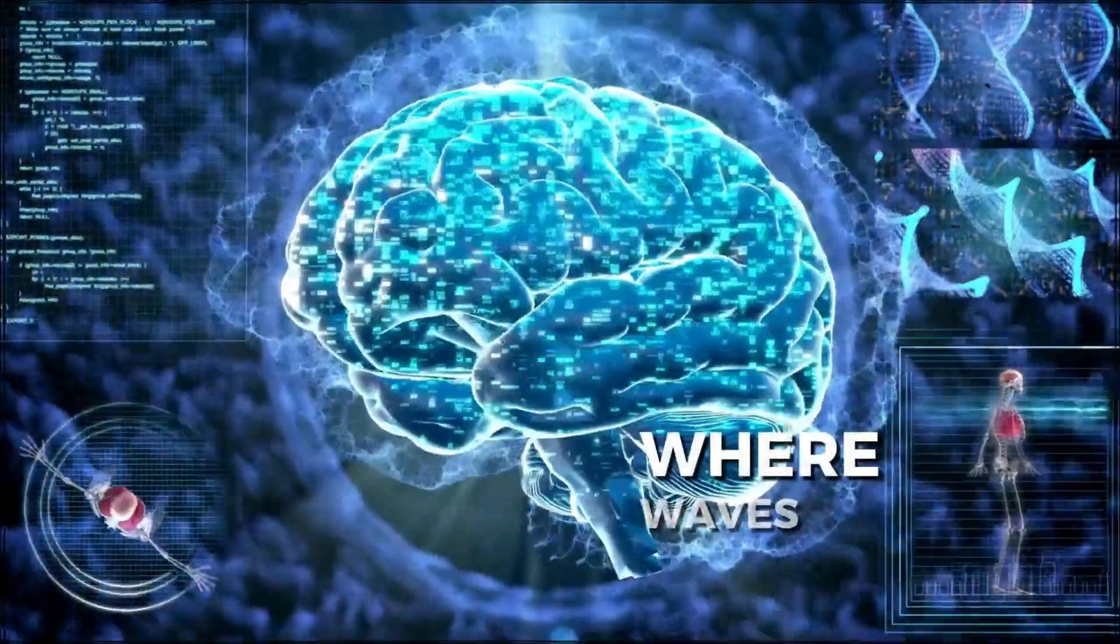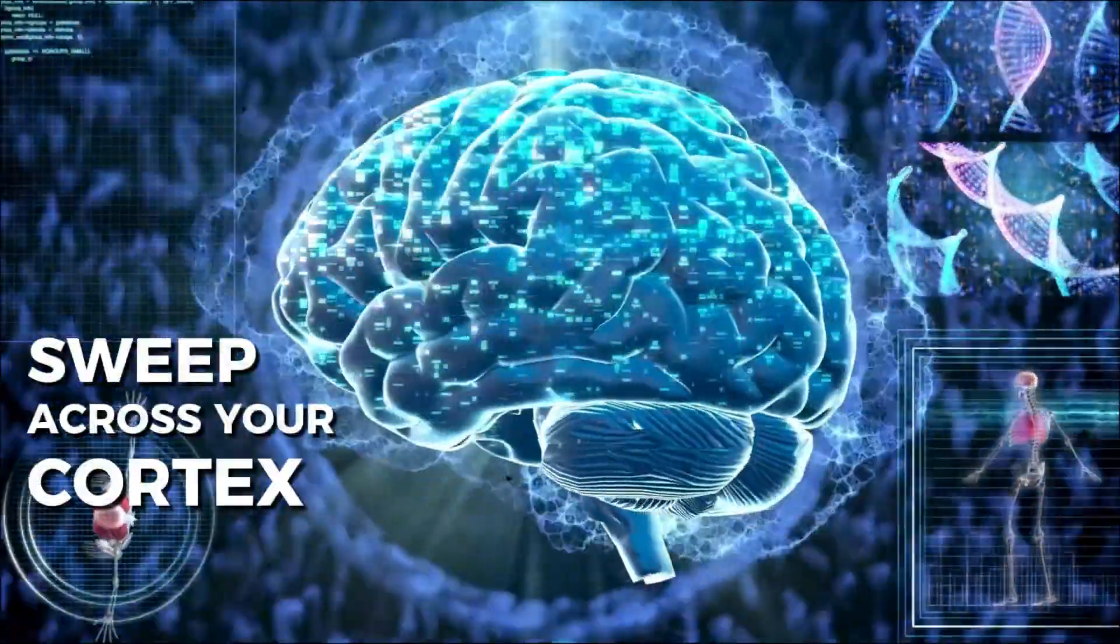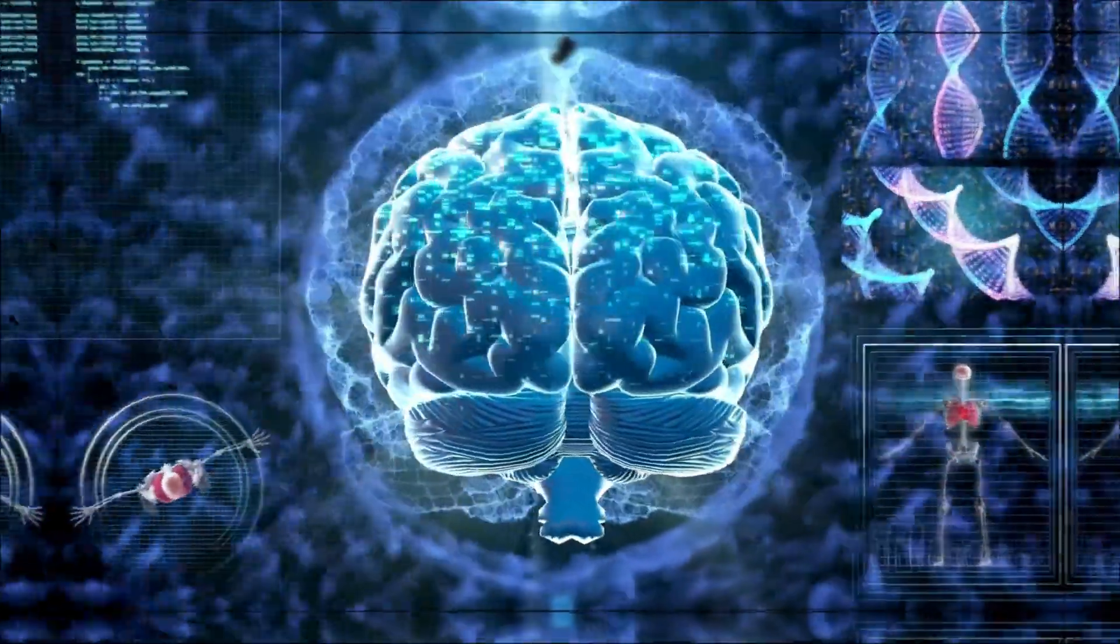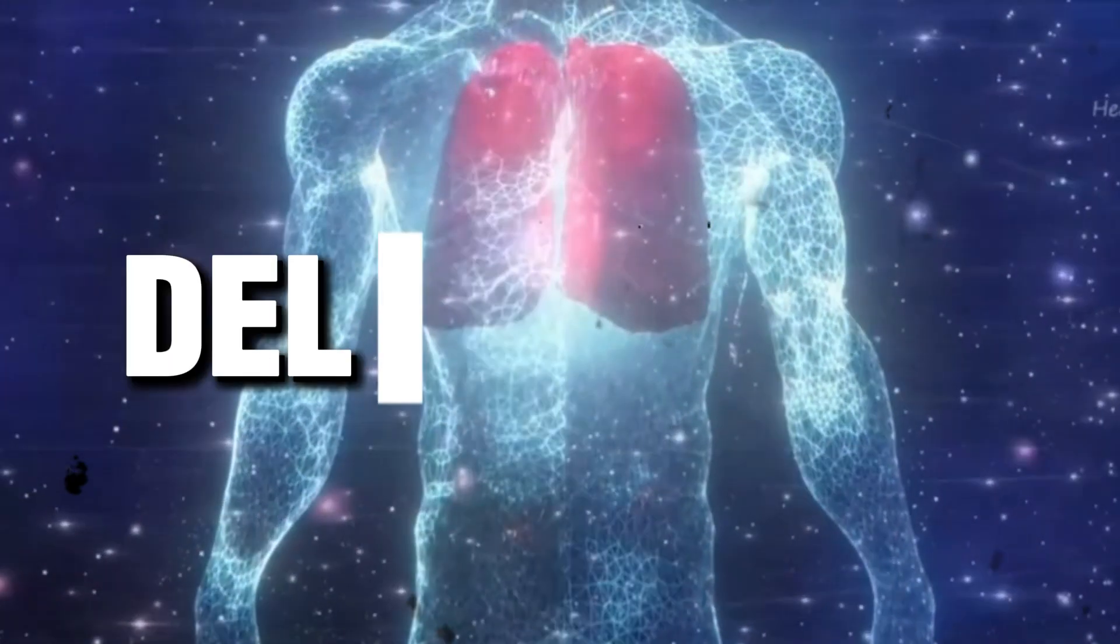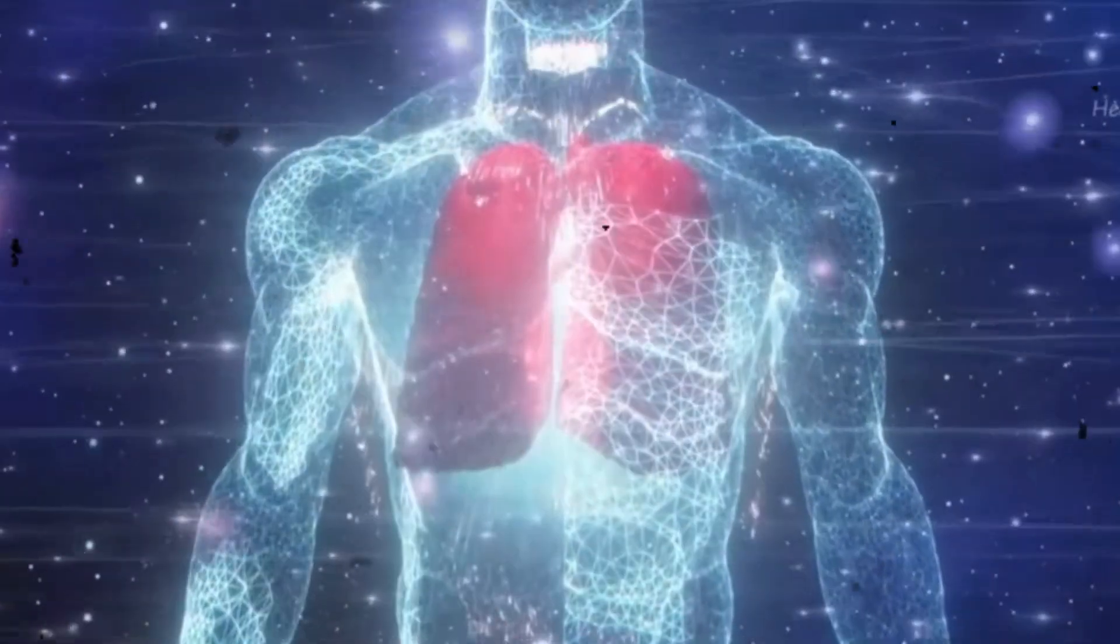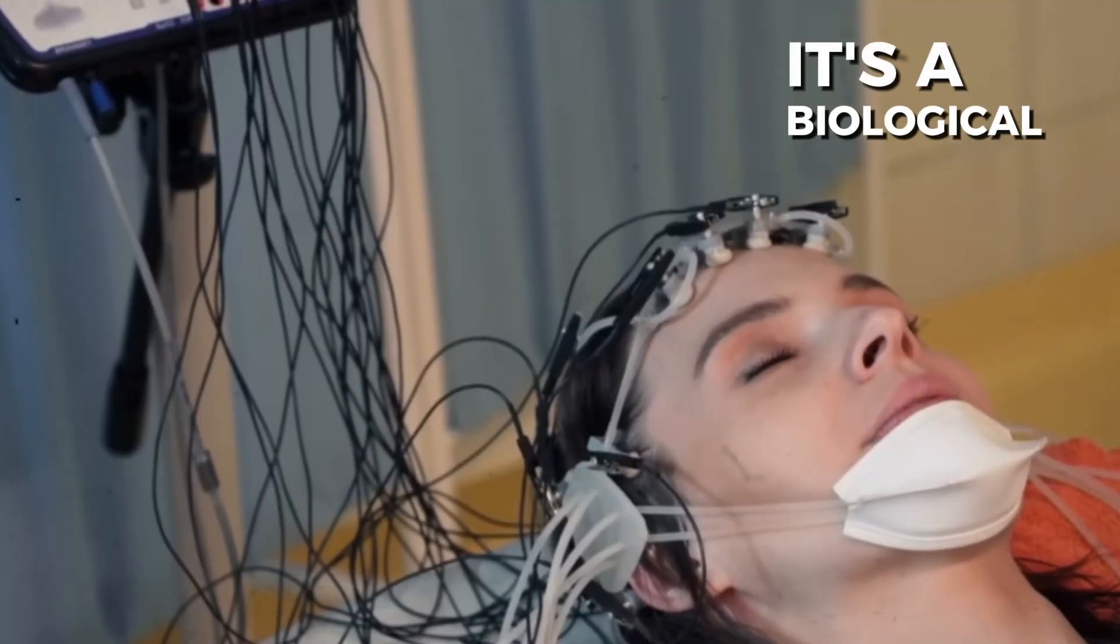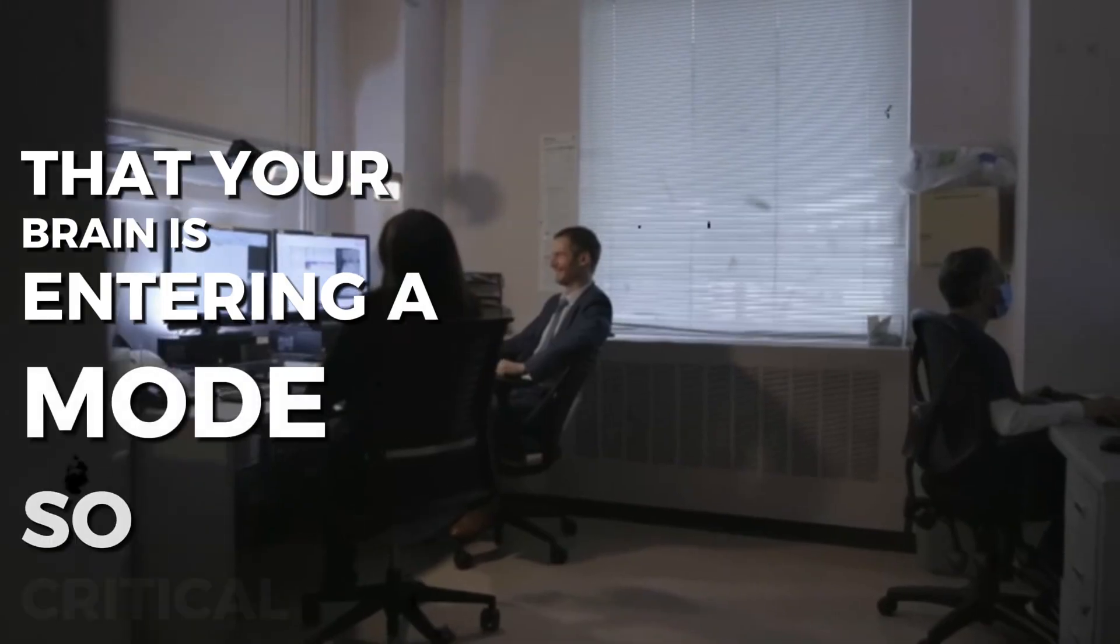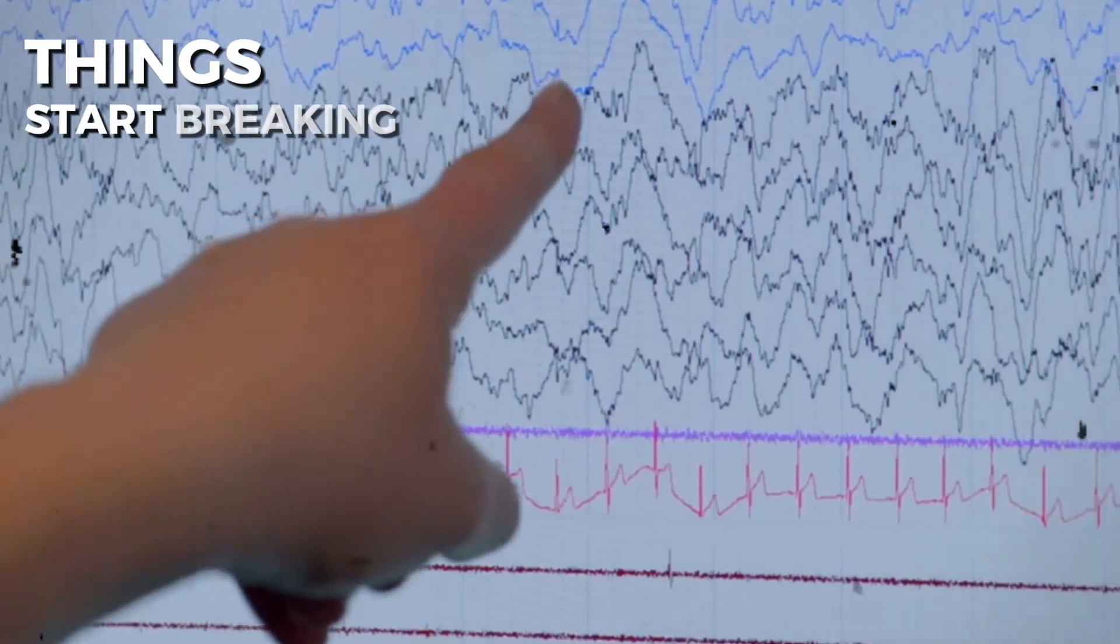It enters a hyper-organized state where waves of electricity sweep across your cortex in slow, powerful pulses. These aren't random. They're synchronized bursts called delta waves, and they only appear when you hit what scientists call slow-wave sleep. It's a biological signal that your brain is entering a mode so critical that without it, things start breaking fast.